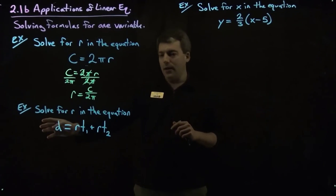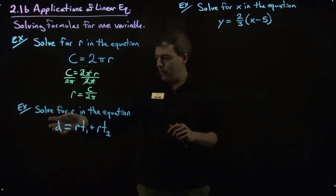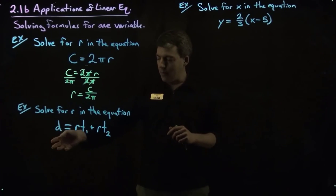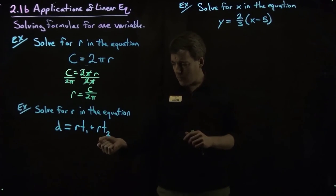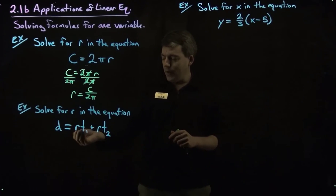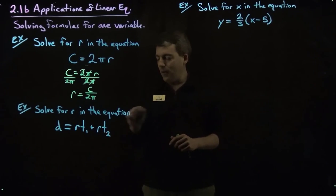If we were to divide both sides by t1 we'd get d divided by t1 and then this whole expression on the right hand side divided by t1. We could then divide this term by t1 and this term by t1 but that doesn't free up the r over here.